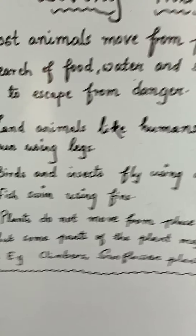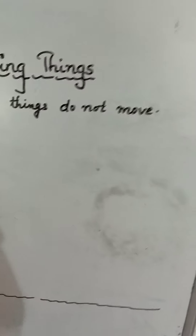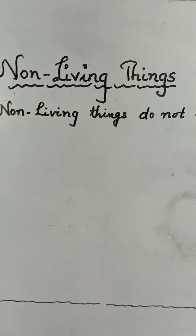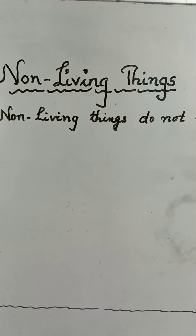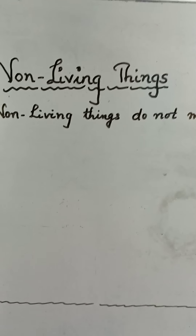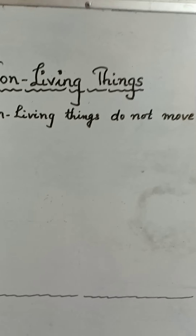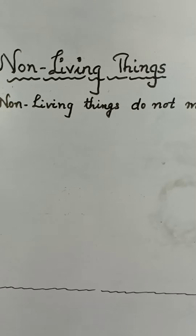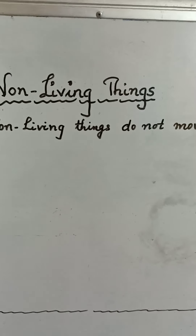So in this way, living things move from place to place. But in case of non-living things, non-living things do not move at all. They can be moved by us — for example, a car moves from place to place, but it is not a living thing. It has a technical or mechanical advantage due to which it moves, and many inventions and technologies have been made.